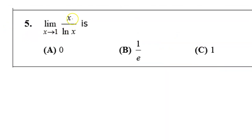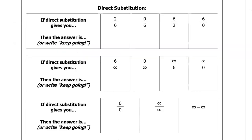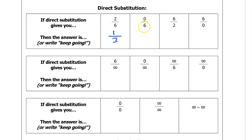For problem number 5, we need to find the limit of x over natural log x as x approaches 1. This is really a thought question. When finding limits, the first step is to always try direct substitution. It's important to know how to interpret the results. If direct substitution gives you 2 over 6, that's your limit — it's 1/3. If you get 0 over 6, that limit is just 0. If you get 6 over 2, that's just 3.